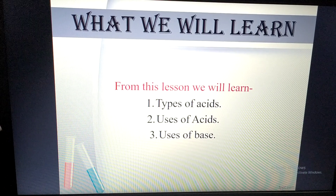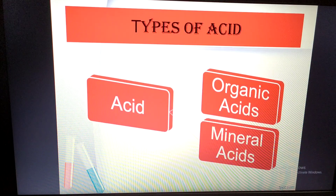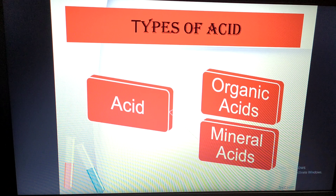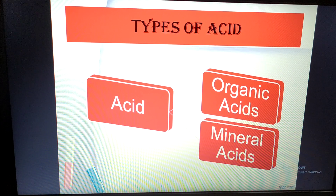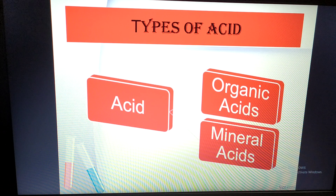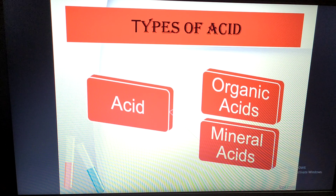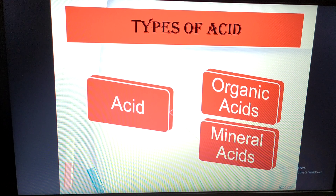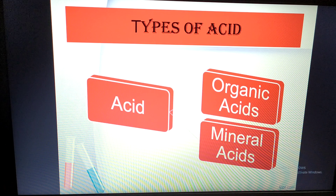Today we will learn: types of acid and uses of acid and base. What are the types of acid? We have observed that some acids we can eat — like tamarind and lemon, which contain citric acid, and apple, which contains malic acid. This type of acid we can intake; it is needed for our body. There are other acids we cannot intake, like hydrochloric acid or sulfuric acid — we take those as medicine or in other ways.